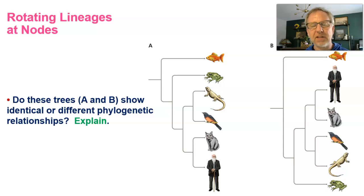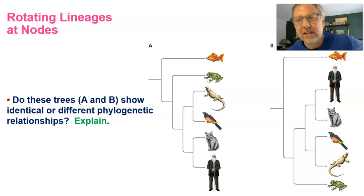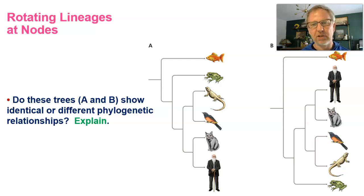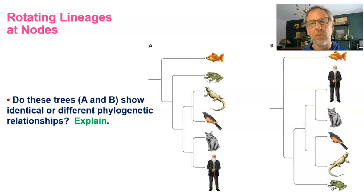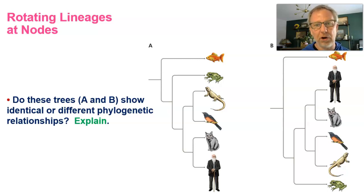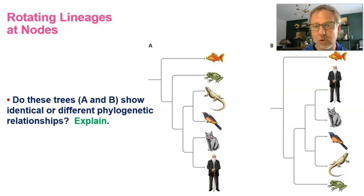Here is a figure from your textbook showing two cladograms and how different lineages are related. Figure A shows Charles Darwin most closely related to a cat — we are all mammals — and a lizard most closely related to a bird — they are reptiles. The lizard and the bird together form a clade, and following that branch down to the node shared with the mammals shows that relationship: the reptiles are most closely related to the mammals.